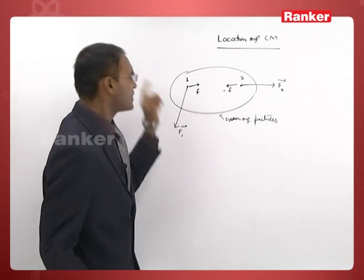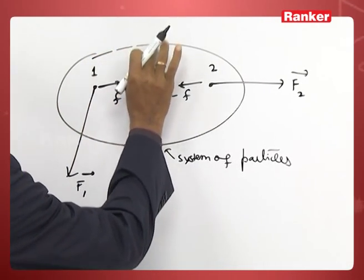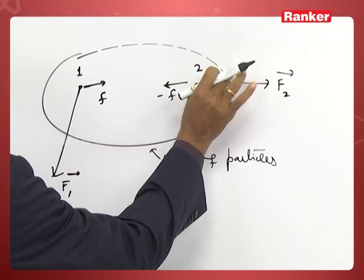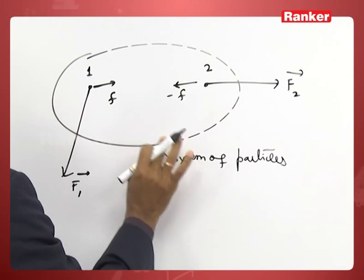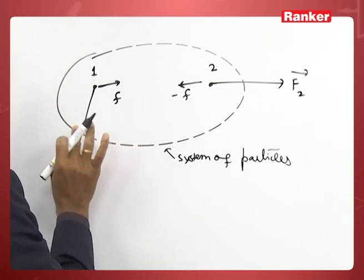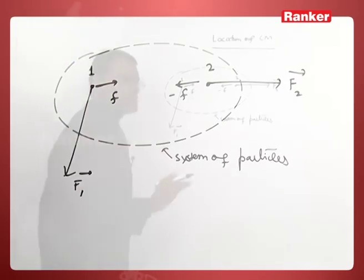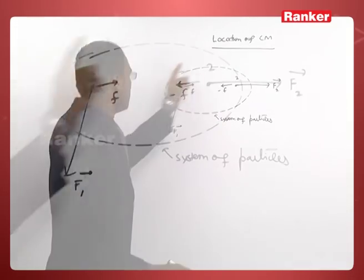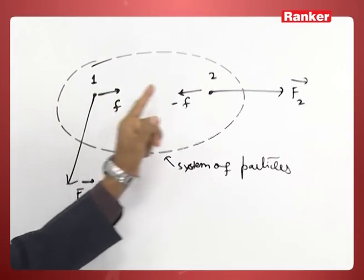If you take this as a system, this boundary as a system, this boundary for the sake of simplicity, you can put it as a dotted boundary or if you want to write as bold boundary also does not matter. This is the system of particles. There are two particles, particle one and particle two.